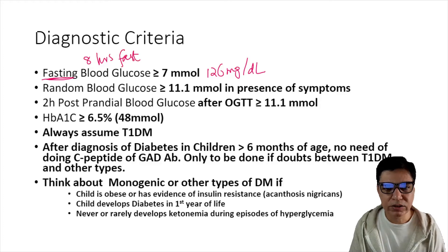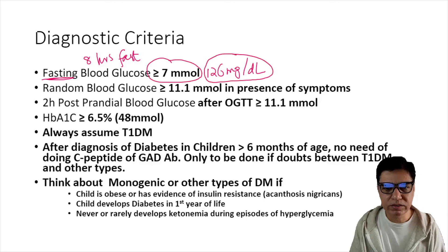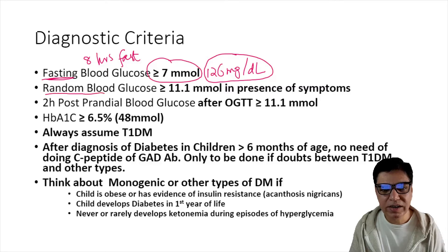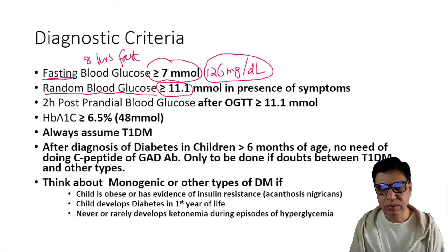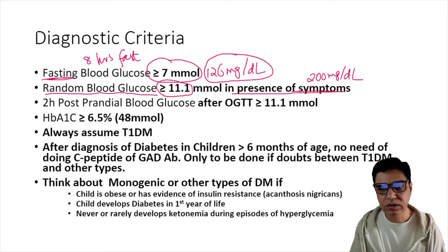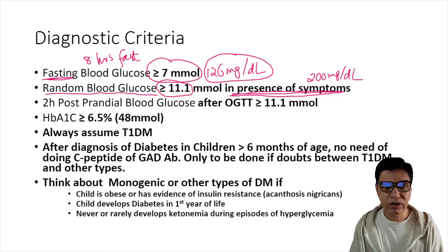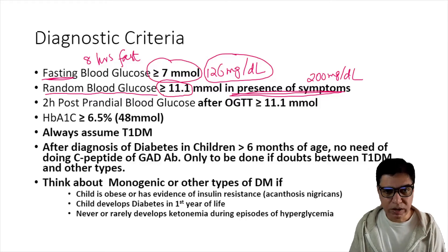Alternatively, if they have symptoms like thirst, polydipsia, polyuria, or lethargy, and a random blood glucose — done any time of day — is greater than or equal to 11.1 mmol/L (200 mg/dL), that gives the diagnosis. One reading if symptomatic is sufficient. If asymptomatic, the elevated reading must be confirmed on another occasion.